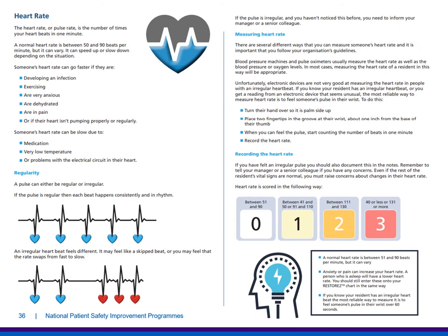The heart rate, or pulse rate, is the number of times your heart beats in one minute. A normal heart rate is between 50 and 90 beats per minute, but it can vary — speeding up or slowing down depending on the situation. Someone's heart rate can go faster if they're developing an infection, exercising, anxious, dehydrated, in pain, or if the heart isn't pumping properly or regularly. A heart rate can be slow due to medication, low temperature, or problems with the electrical circuit in the heart. A pulse can be regular or irregular — if it's regular, each beat happens consistently. An irregular heartbeat may feel like a skipped beat, or the heart swapping from fast to slow. If a pulse is irregular and you haven't noticed this before, you need to inform your manager or a senior colleague.